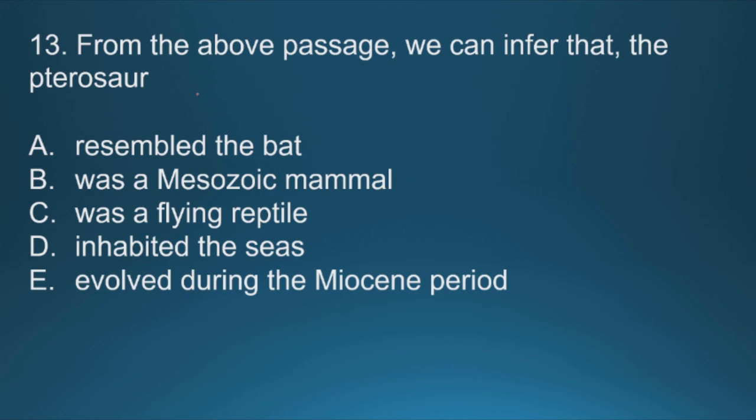Question thirteen: From the above passage we can infer that the pterosaur resembled the bat, was a Mesozoic mammal, was a flying reptile, inhabited the seas, or evolved during the Miocene period. The correct answer is option C, was a flying reptile. Pterosaur was the flying reptile. That's why I suggest you read the passage first and then answer.